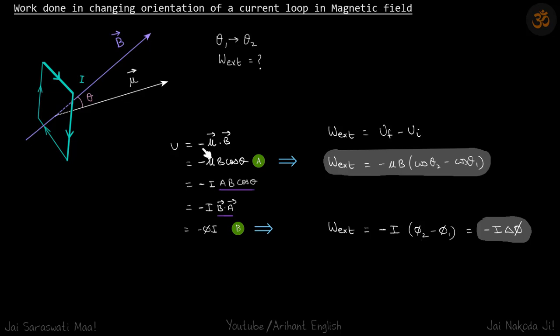mu dot B we can write as minus mu B cos theta, and mu I can write as i A. So A B cos theta becomes B dot A, and B dot A is flux.